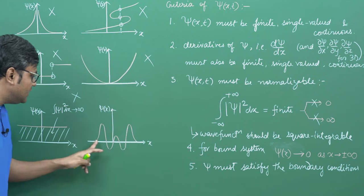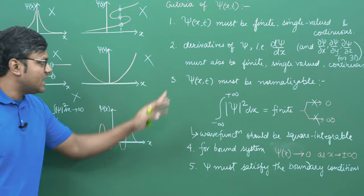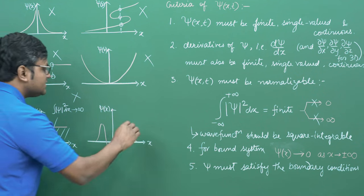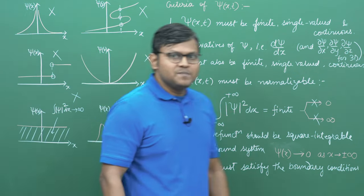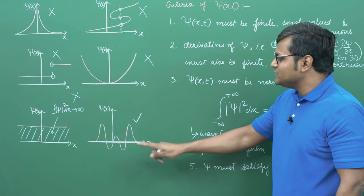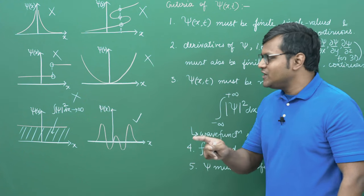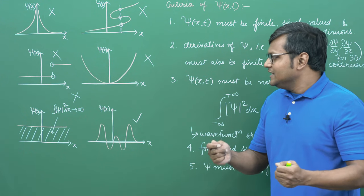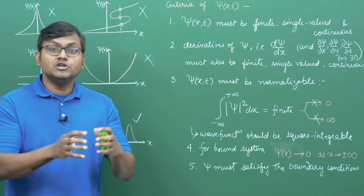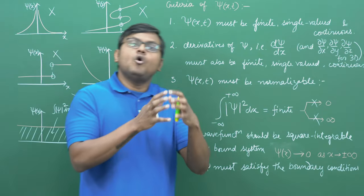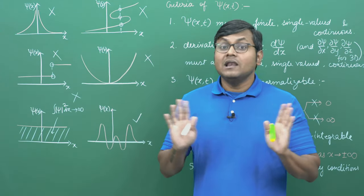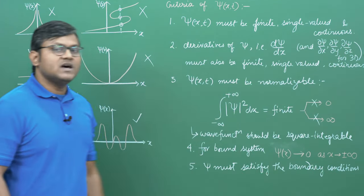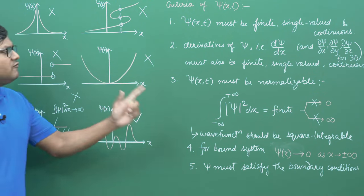The last wave function is finite, single-valued, continuous, smooth — its derivatives appear to exist — and it seems normalizable. This is a possible, allowed function. Out of all of them, only this last one is allowed. The whole point of this exercise is to understand that the Schrödinger's equation could have many different solutions, but not all of them are physically acceptable — only those satisfying the required conditions are valid.